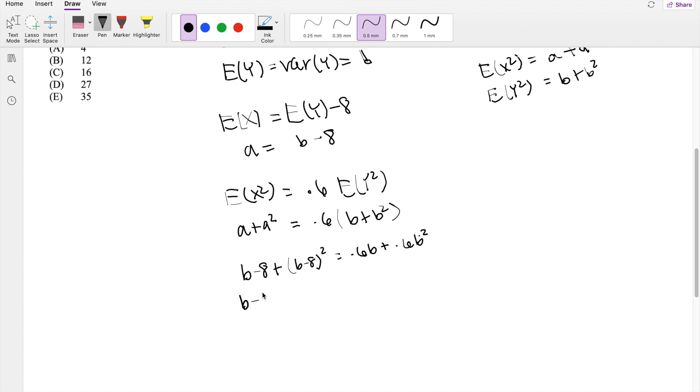Factoring out this thing here, you're going to get b minus 8, b squared minus 16b plus 8 times 8, which is 64, is equal to 0.6b plus 0.6b squared.